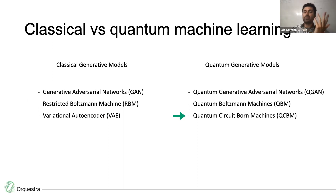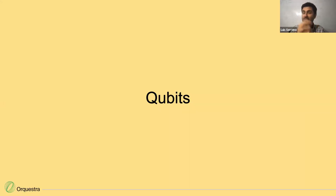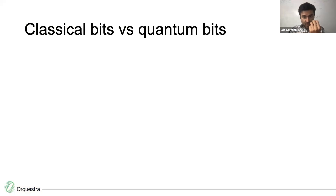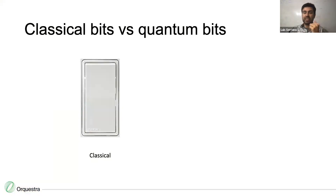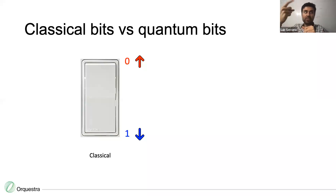A quantum computer is made of qubits, just as a classical computer is made of bits. I like to think of bits as a switch — on or off. Zero is up, red, on; one is down, blue, off. A classical switch can only be on or off. A quantum bit, or qubit, is more like a dimmer switch — you can put it anywhere between on and off, or even in the middle.